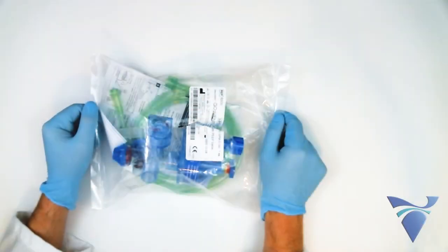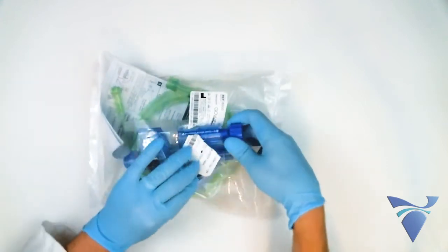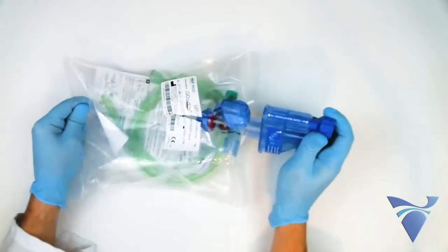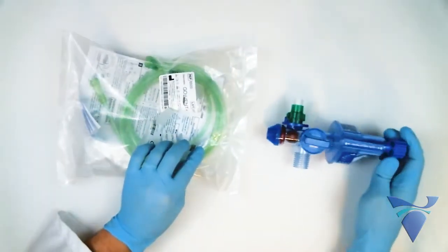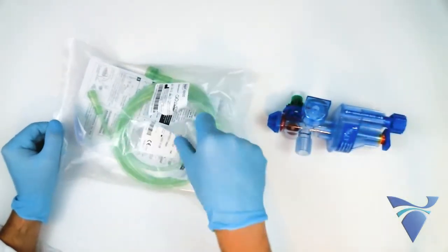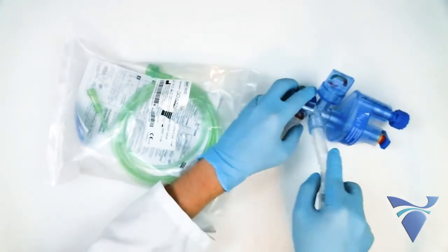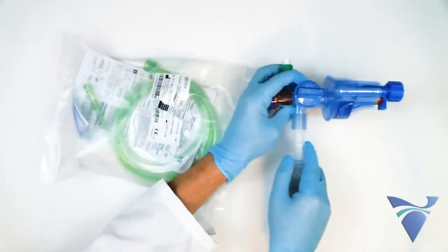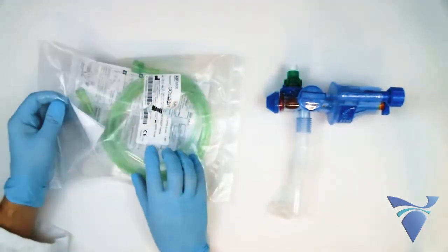The GoToVent comes packaged with everything you need to connect between the patient and your oxygen source. Included is the GoToVent itself, a flex hose for connecting the GoToVent to the patient's mask or endotracheal tube, and oxygen tubing.